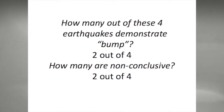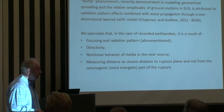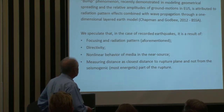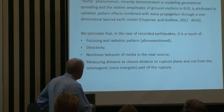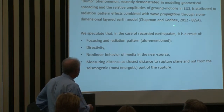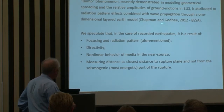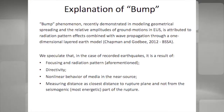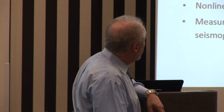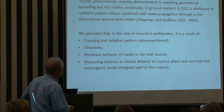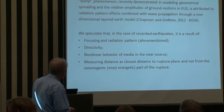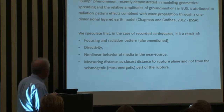I've been asked many times how we explain this bump. Recently we found similar results in a publication in BSSA — Chapman and Goodby, BSSA 2012. They also demonstrated a bump or amplification of ground motion at a certain distance from the fault, not exactly on the fault. Their explanation — and this is a quote from them — is that it is because of wave propagation through a one-dimensional layered Earth model.